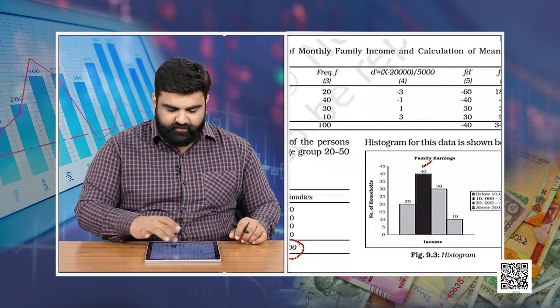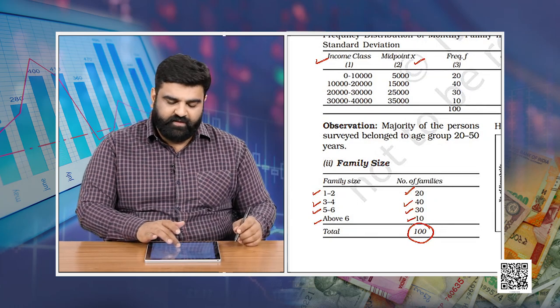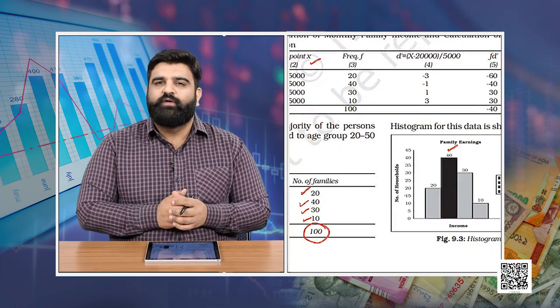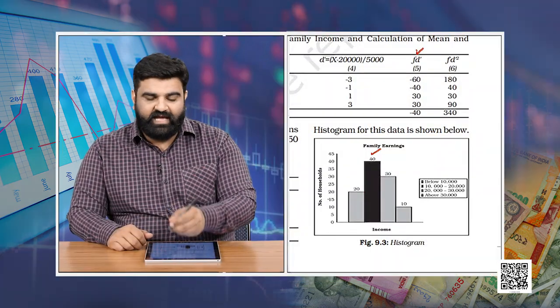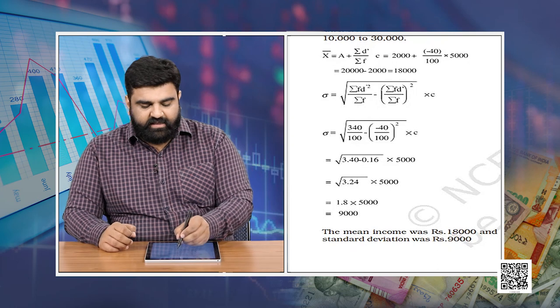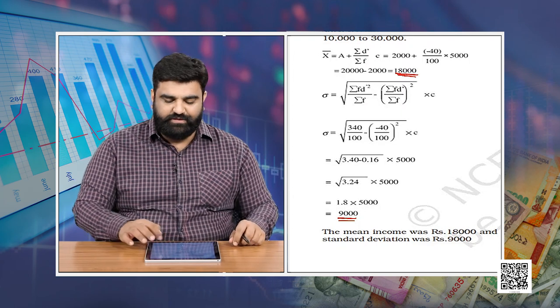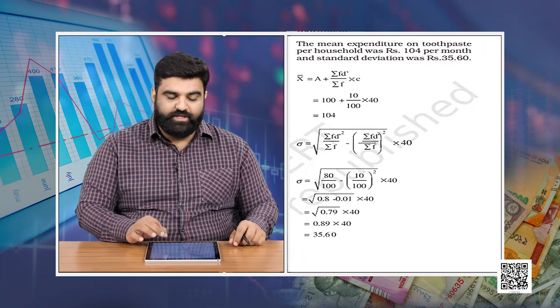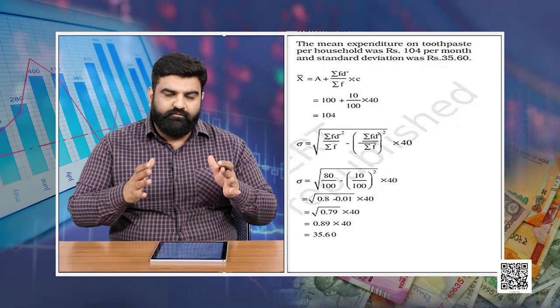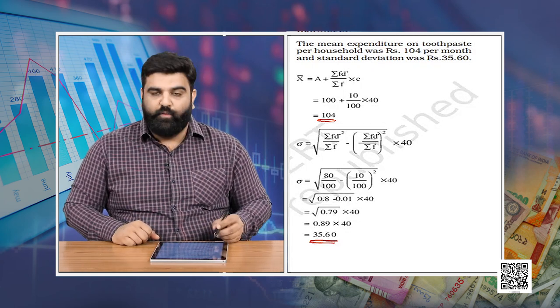Now let's find the mean and standard deviation of the family income. We have the income class, midpoints, and frequencies. We observed that the mean income was 18,000 and the standard deviation of the monthly family income was 9,000. Similarly, the monthly family expenditure on toothpaste was 104 rupees with a standard deviation of 35.60.